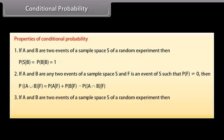Property 3: If A and B are two events of a sample space S of a random experiment, then P(A′|B) = 1 − P(A|B), where A′ denotes the complement of event A.